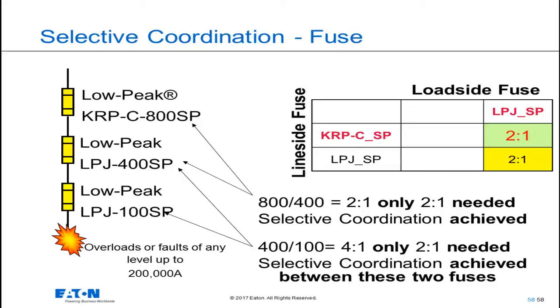Upstream of the LPJ-400, I have an 800 amp — that is a 2 to 1 ratio. I selectively coordinate for all currents passing through all three of these fuses up to 200,000 amps.